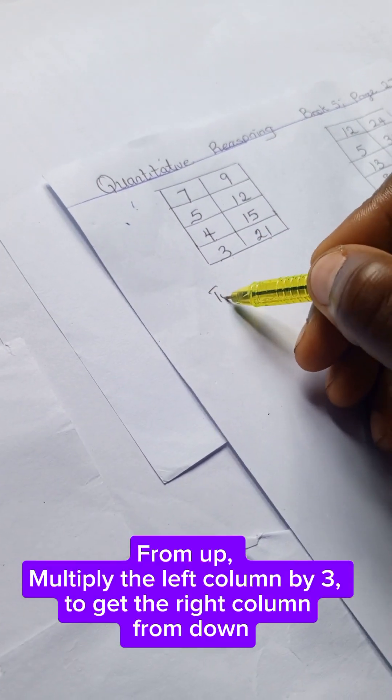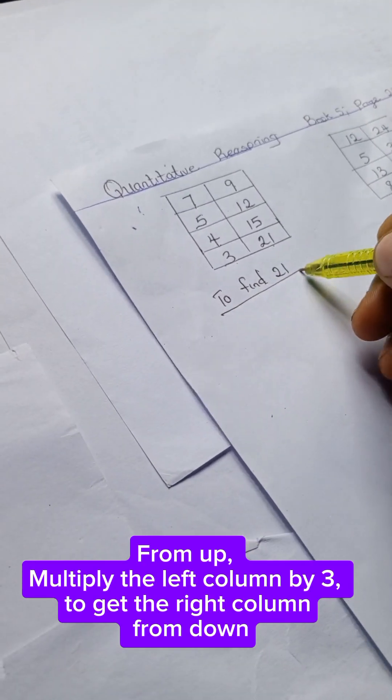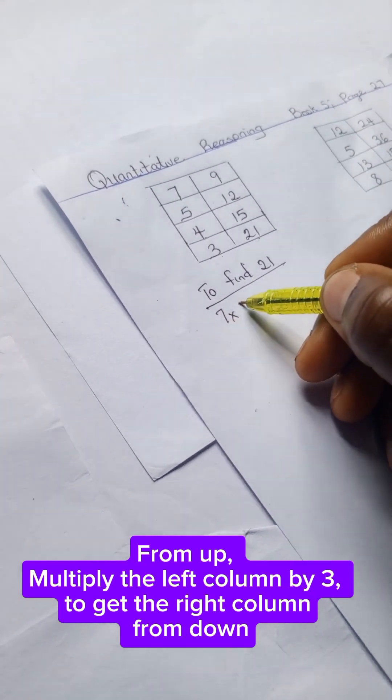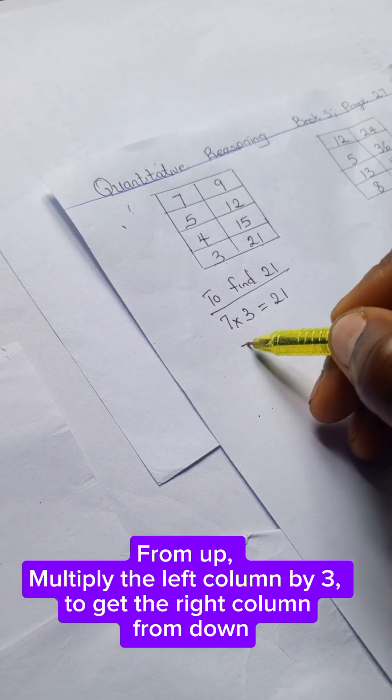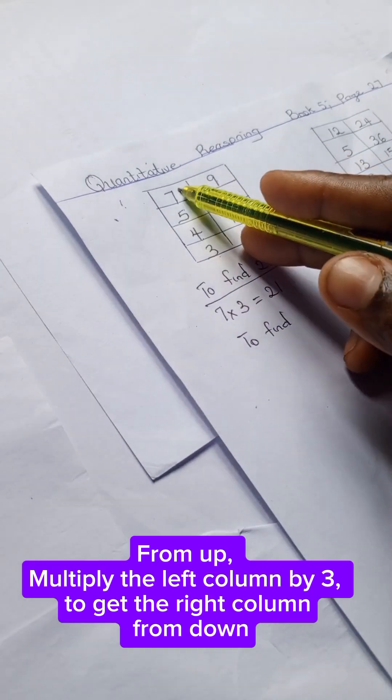We're going to have 7 times an imaginary 3, which gives us 21. To find this 7, to find 5 here, we have 5 times 3.